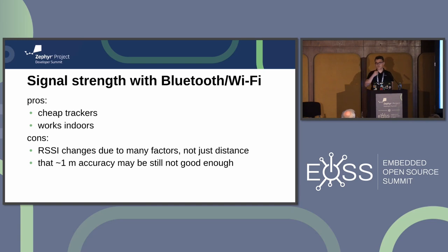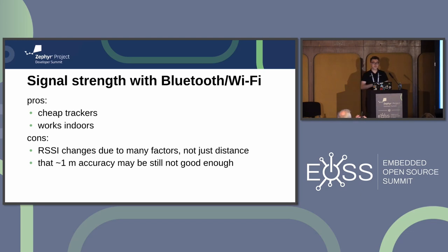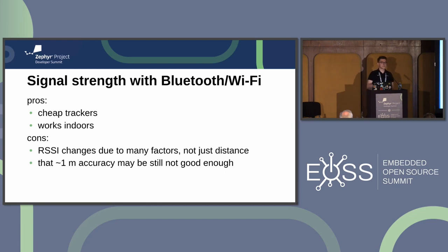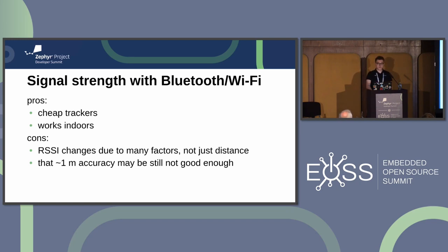In general these systems are pretty cheap and easy to build, and they work in indoor settings as opposed to GPS trackers. The accuracy with Bluetooth is up to one meter, which is good for some use cases, but there are a few problems. First, the measured signal strength is affected not only by distance but also by signal reflections, attenuation, etc., and these systems behave quite poorly in non-line-of-sight situations where there's some obstruction between the two devices. Secondly, there are many use cases where that maximum one-meter accuracy just isn't enough.